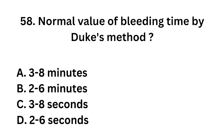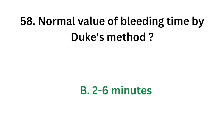Question number 58: What is the normal value of bleeding time by Duke's method? Option A: 3 to 8 minutes. Option B: 2 to 6 minutes. Option C: 3 to 8 seconds. Option D: 2 to 6 seconds. The correct answer is Option B: 2 to 6 minutes. Normal bleeding time by Duke's method is 2 to 6 minutes.